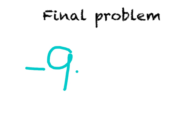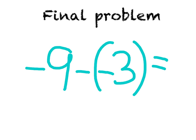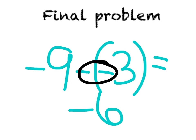Negative 9 minus negative 3 equals negative 6. Notice that these two negatives are next to each other, and the answer is also negative.